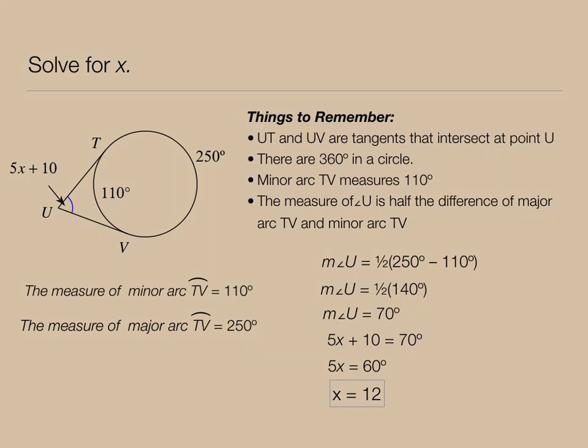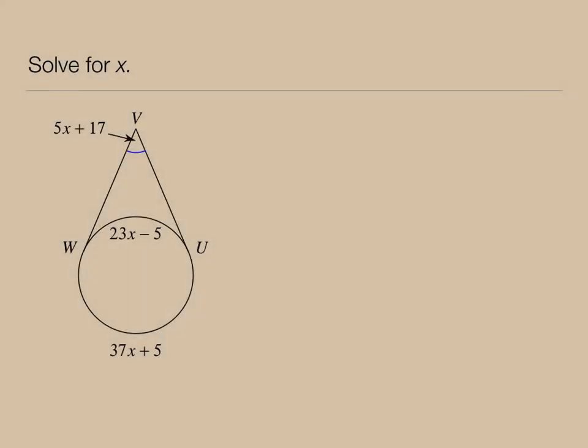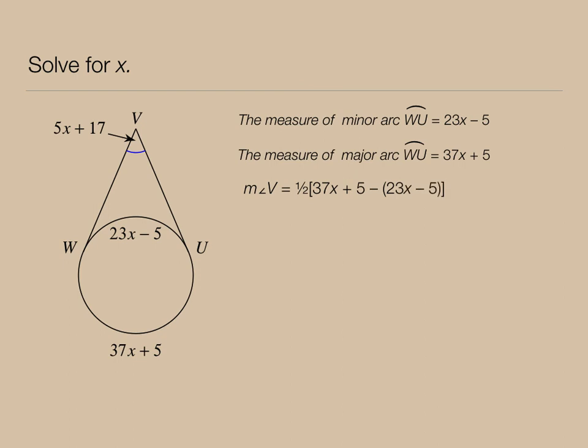One last problem. More algebraic expressions. We're asked to solve for x. It's going to be the same process, but this time we're just using a lot of algebra. We know that minor arc WU is 23x minus 5. Major arc WU is 37x plus 5. So therefore the measure of angle V must be half the difference of the bigger arc minus the smaller arc. Now notice I used parentheses to subtract off the smaller arc.